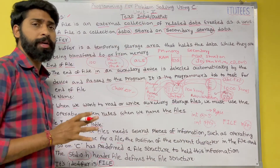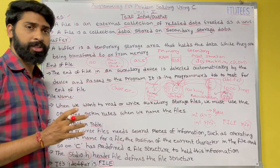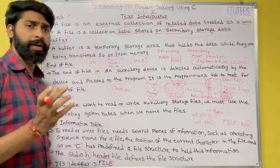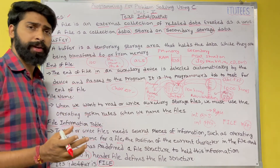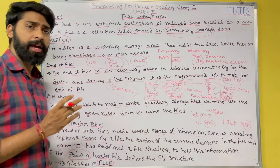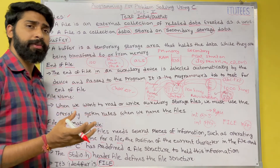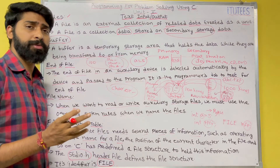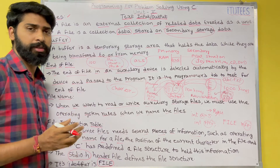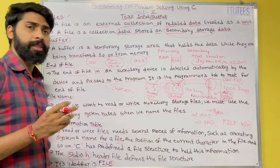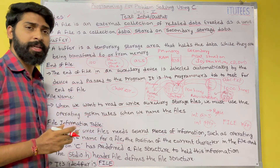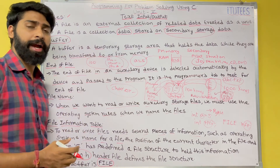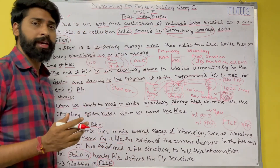To recap: a file is a collection of data that is stored on a secondary storage device. A buffer is a temporary memory used to read and write data to a file. End of file — the device automatically identifies the end of the file and passes it to the program, and the programmer handles it. File names follow operating system rules. The file information table contains the file name, the position of the current character, and so on. In C, predefined file structures are included in stdio.h and their identifier is FILE.